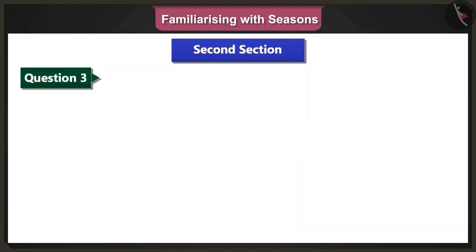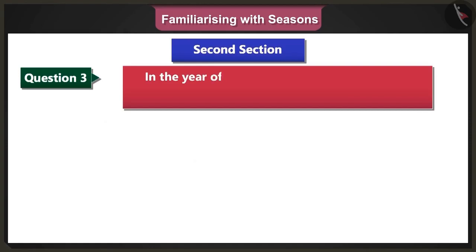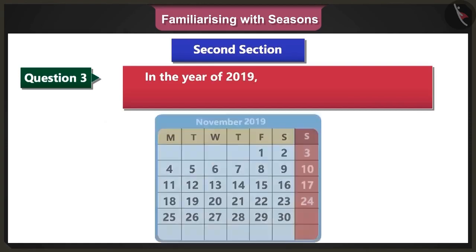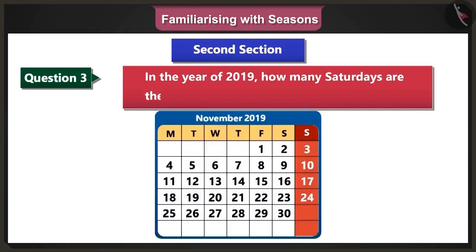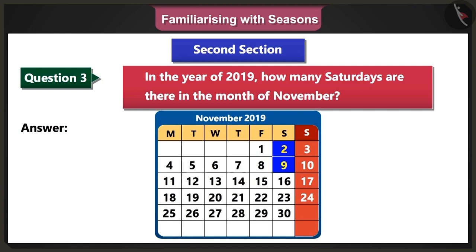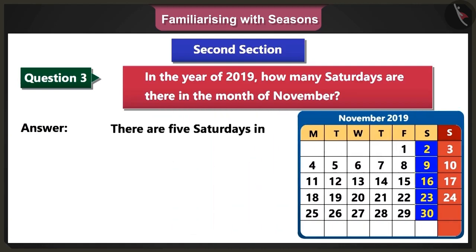Third question: In the year 2019, how many Saturdays are there in the month of November? Answer: In the year 2019, in the month of November, Saturdays come on the 2nd, 9th, 16th, 23rd and the 30th. Therefore, there are 5 Saturdays in this month.